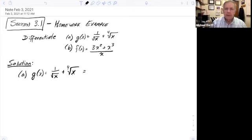So 1 over the square root of x. Well, the square root of x is x to the 1 half power. Because it's in the denominator, that's going to mean 1 over the square root of x is equal to x to the negative 1 half power.